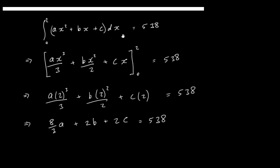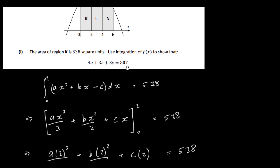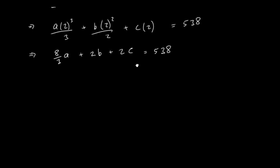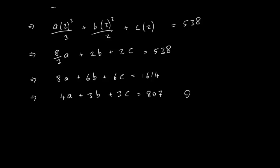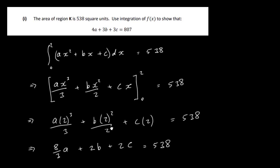We need to show that 4a plus 3b plus 3c equals 807. If we multiply 8a/3 plus 2b plus 2c equals 538 across by 3, we get 8a plus 6b plus 6c equals 1614. Now dividing across by 2 gives us 4a plus 3b plus 3c equals 807. That confirms the required result.